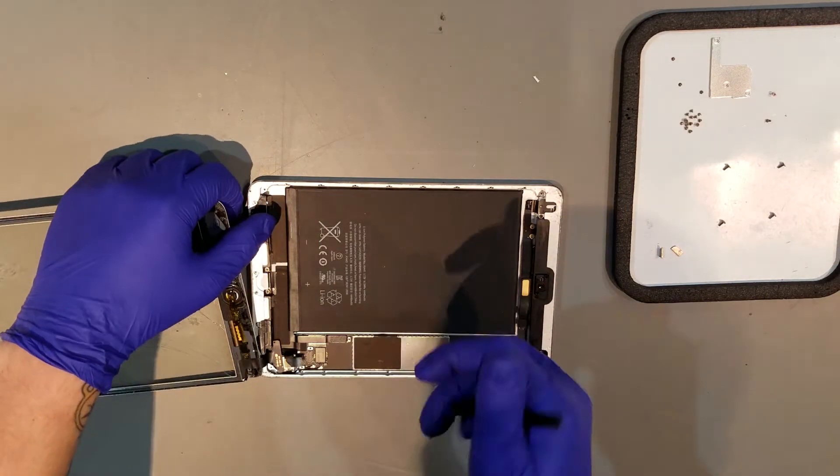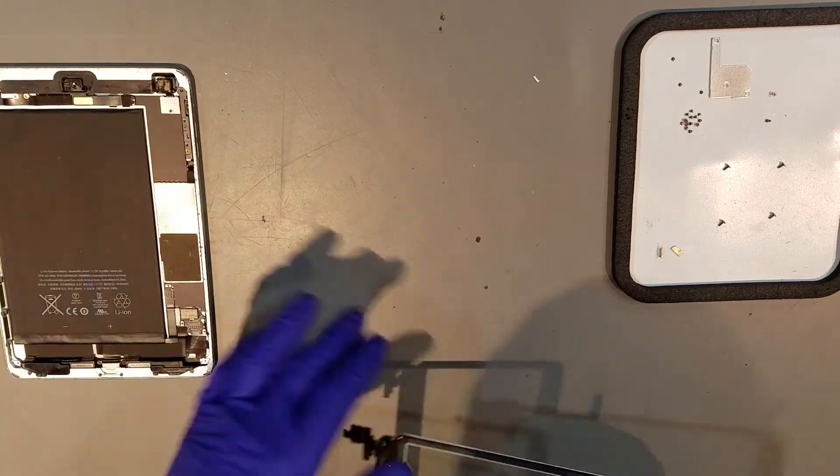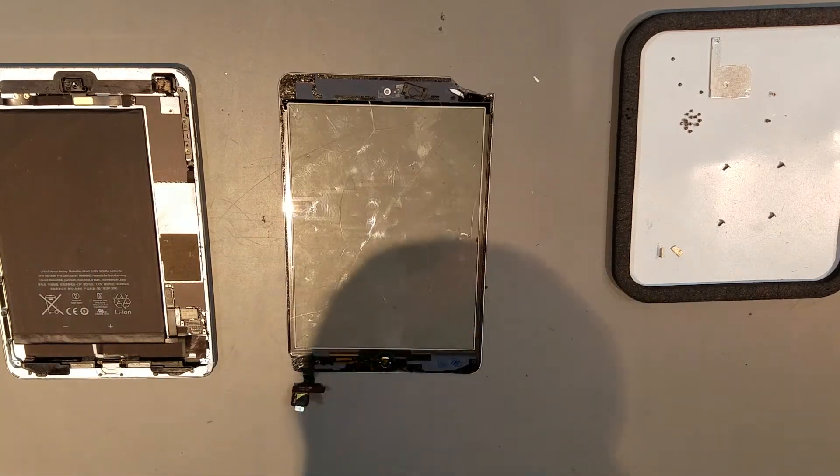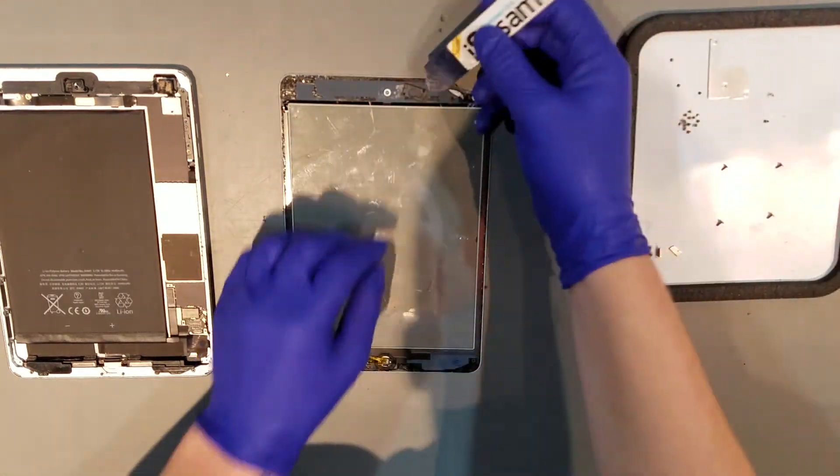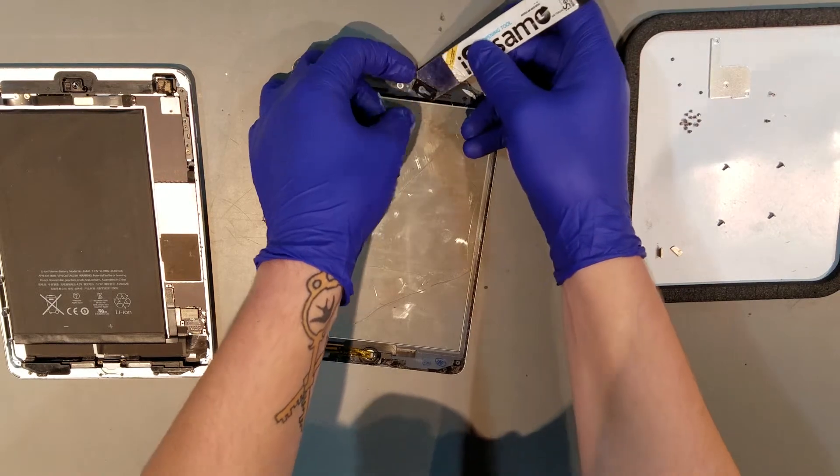Then once the digitizer is unclipped, the glass as a whole can be removed. There's usually adhesive that holds this part of the flex down, so just be aware of that when removing the glass. Once you get the piece of glass off, you'll want to remove the two magnets if you haven't already, as well as the camera spacer, as you'll need all these later.